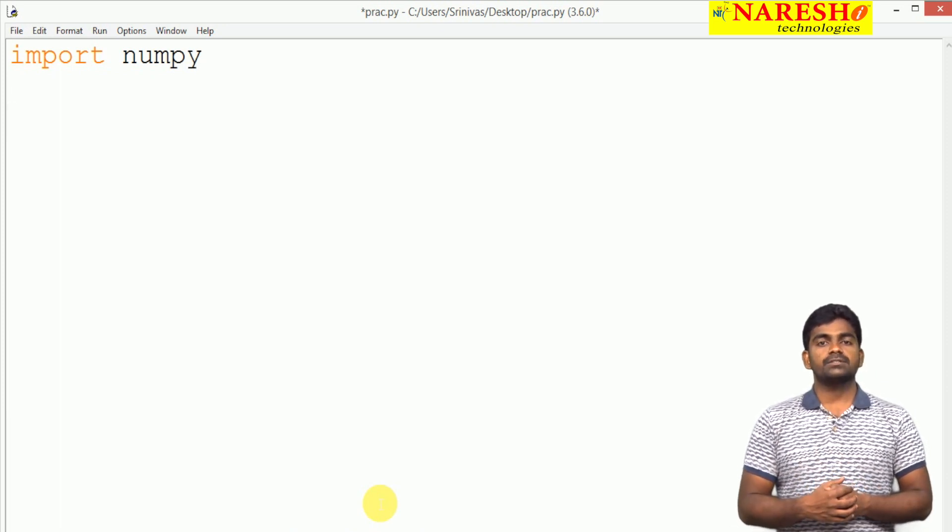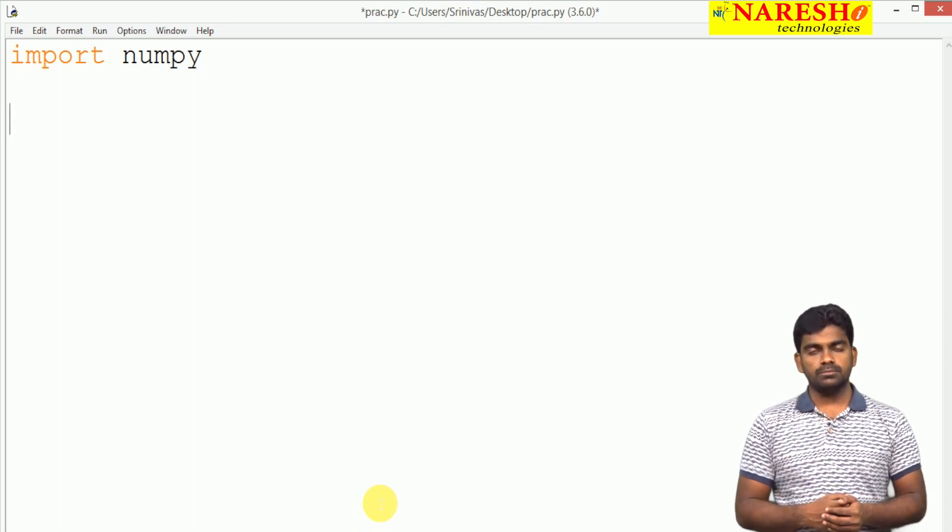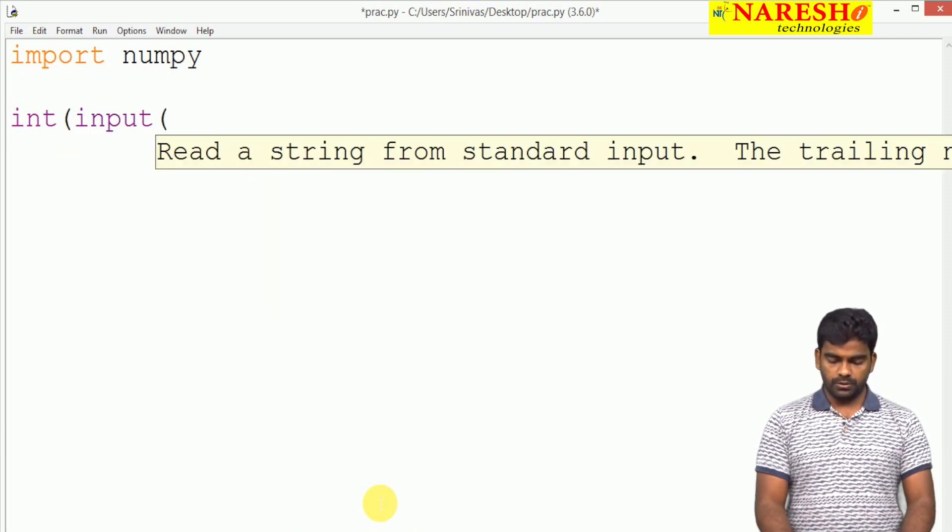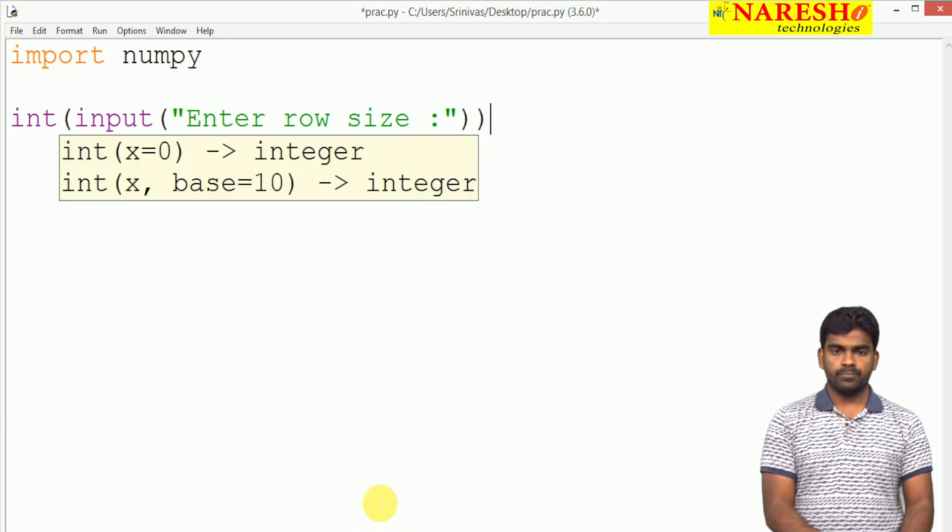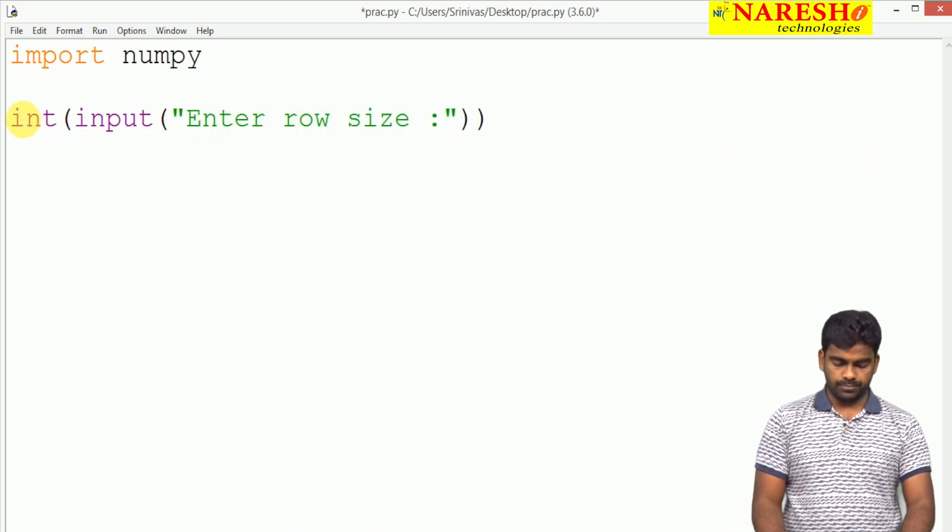Whenever we are constructing the two-dimensional array, we need the number of rows and number of columns. First, I am asking integer of input, enter row size, how many number of rows. That we are collecting into a variable called m.